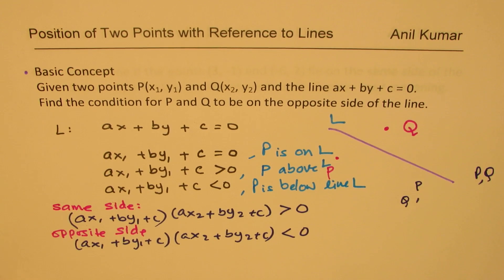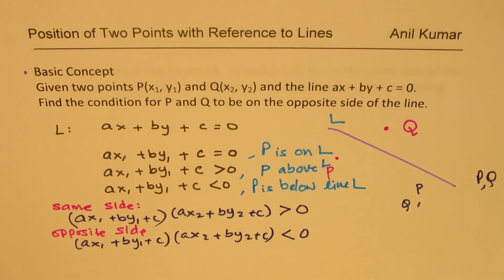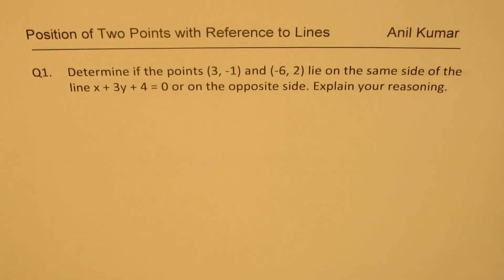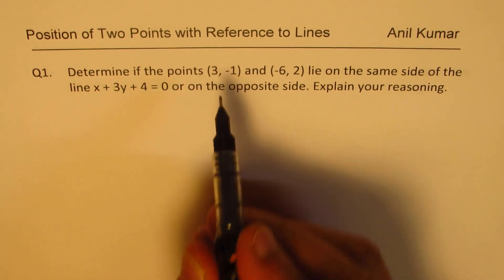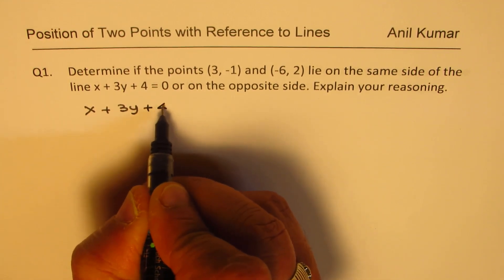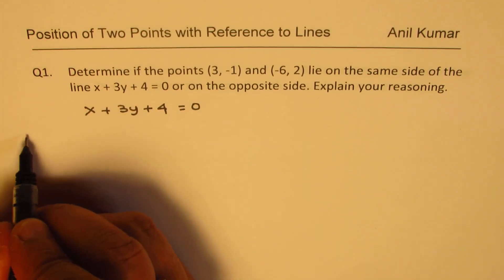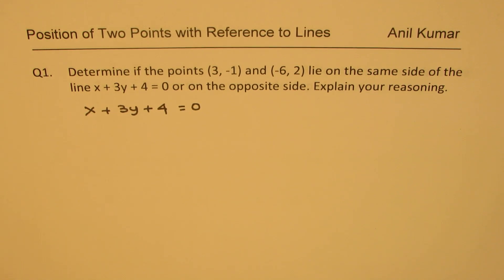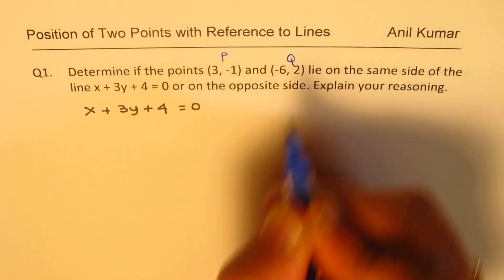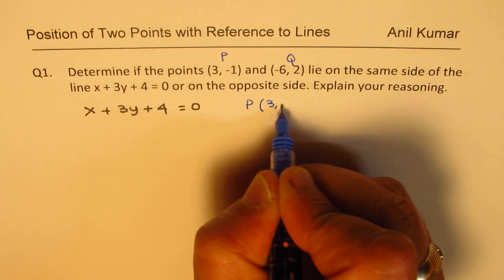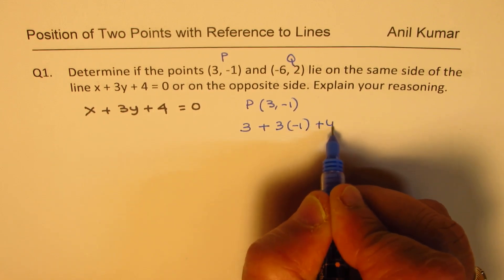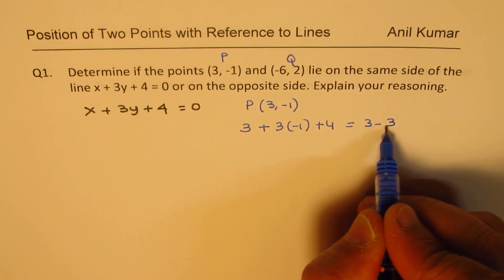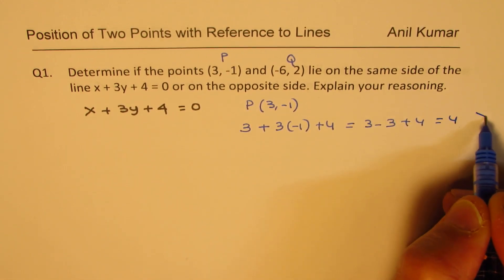Based on this concept, let's answer the questions. Question one: determine if the points (3, -1) and (-6, 2) lie on the same side of the line x + 3y + 4 = 0. We substitute P = (3, -1): we get 3 + 3×(-1) + 4 = 3 - 3 + 4 = 4, which is greater than 0.